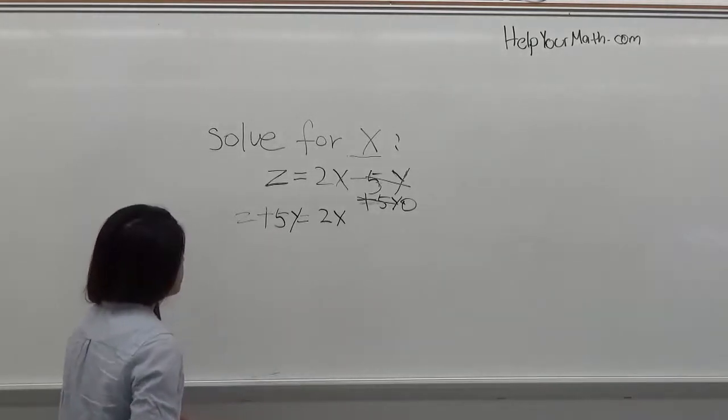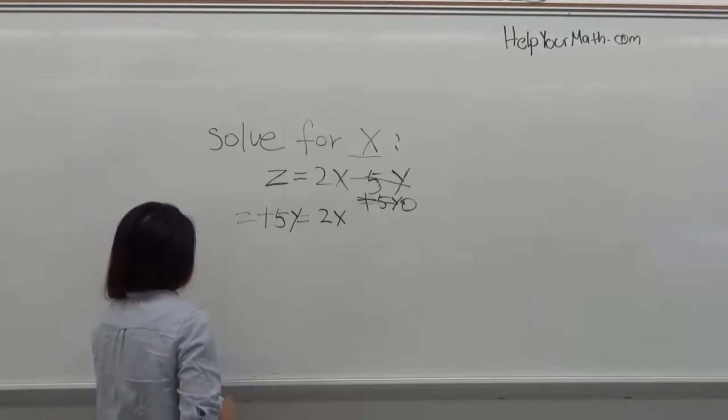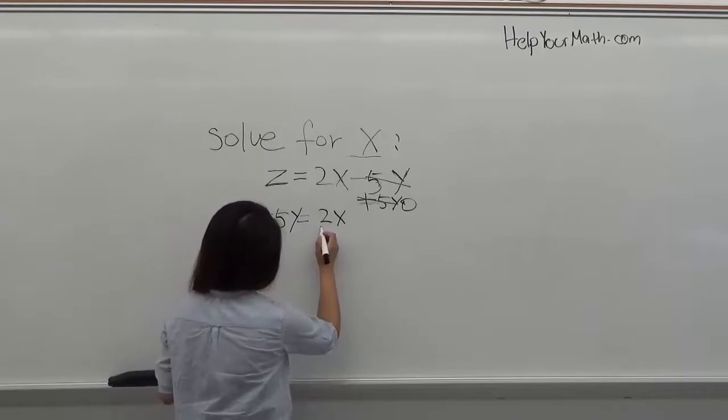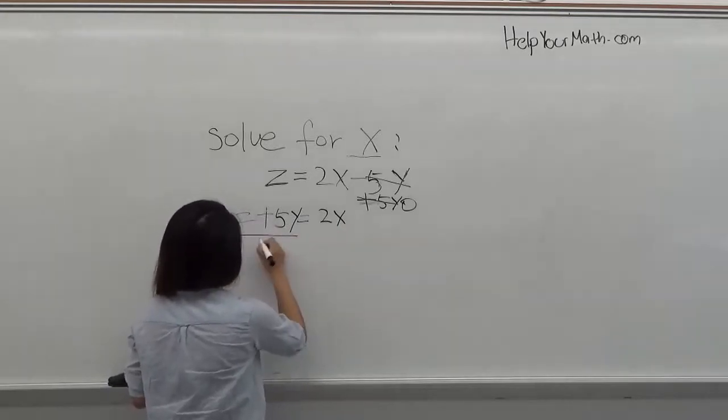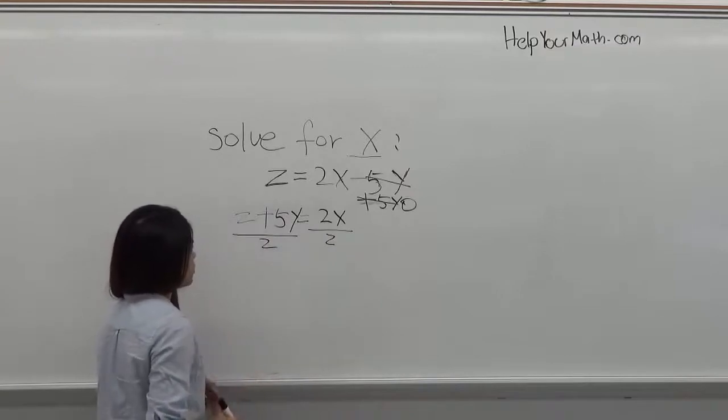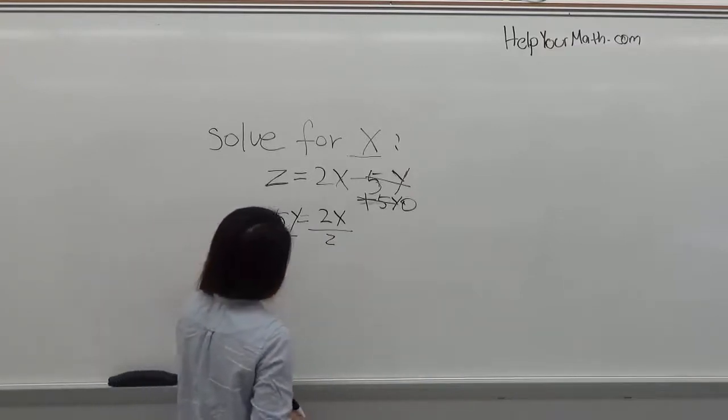Then step 3, you're going to undo multiplication by dividing the leading coefficient, which is 2 here. So you divide both sides by 2. Because in this equation, whenever you do one side, you have to do both on the other side.